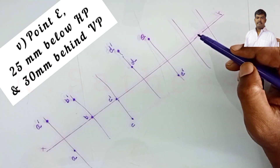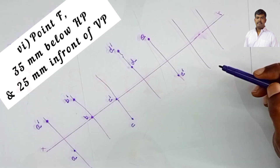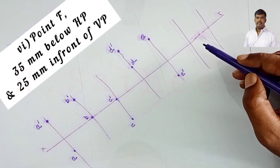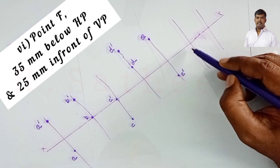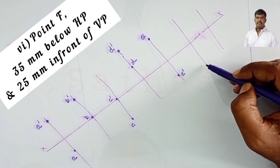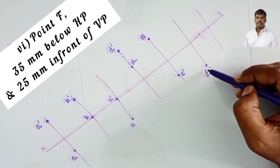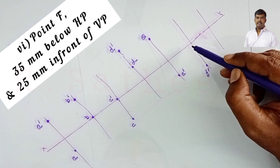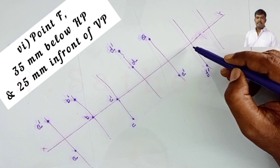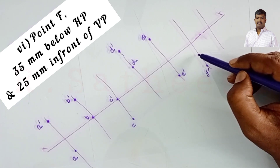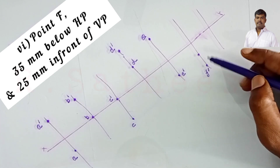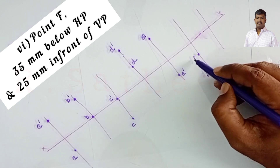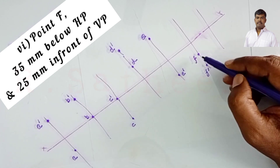Point F is 35 mm below HP and 25 mm in front of VP. The front view F dash is 35 mm below HP. Since it is below HP and in front of VP, point F lies in the fourth quadrant. The top view is also below XY.